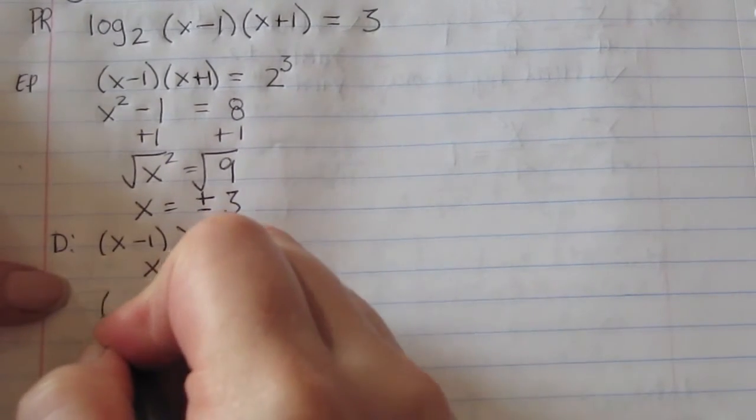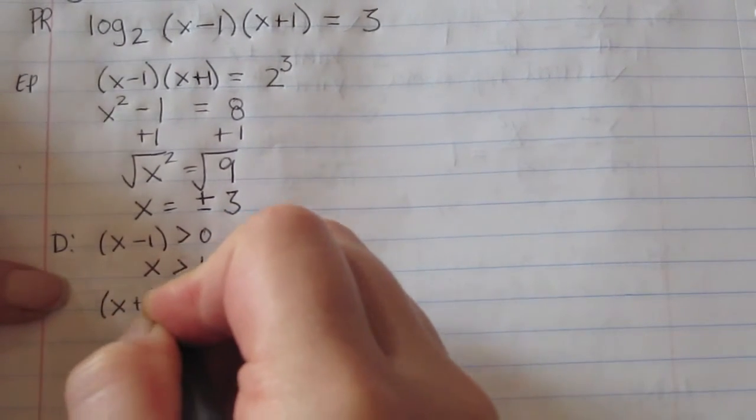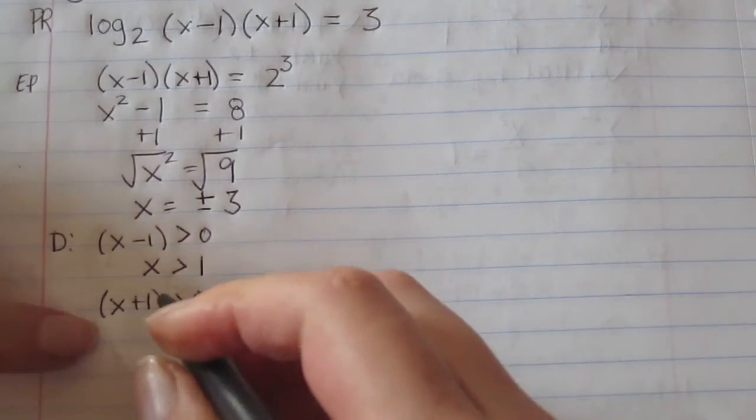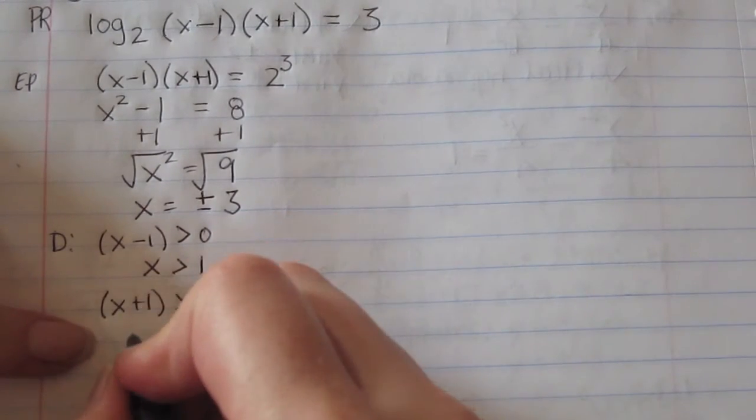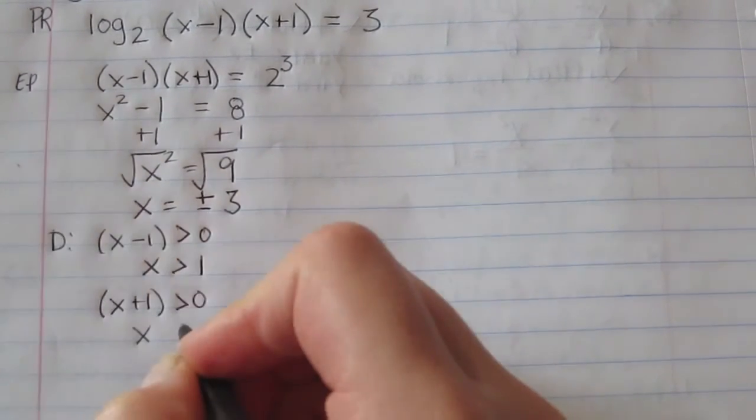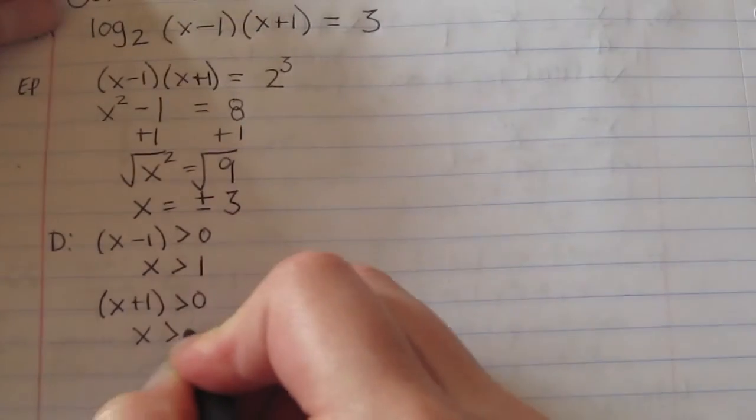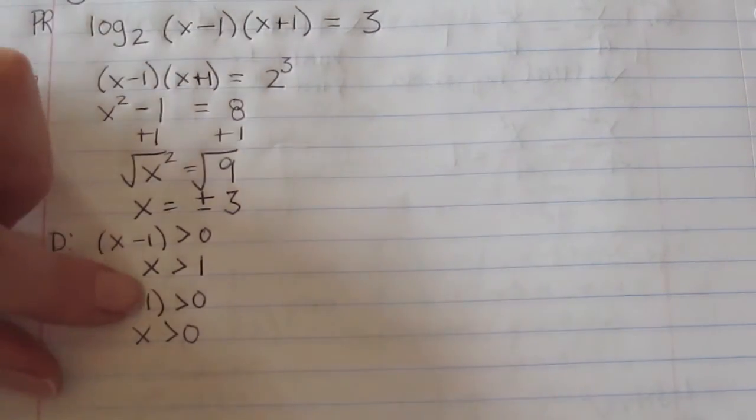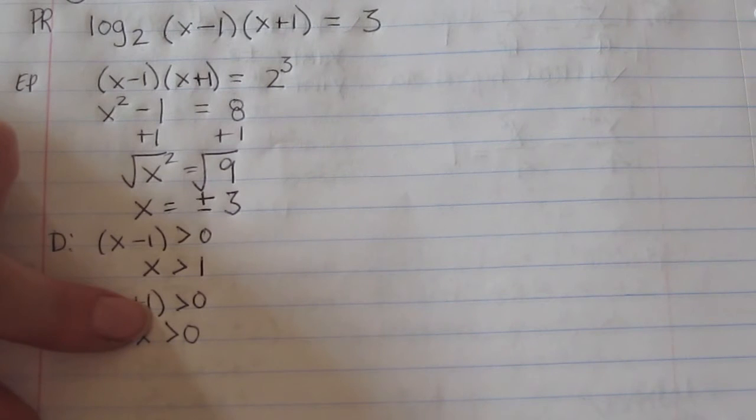Using the other one, x plus 1 greater than 0, so x is going to be greater than 0 because we know it can't equal anything less than 0 or 0.